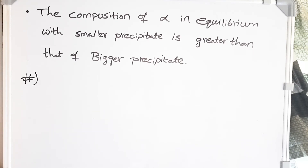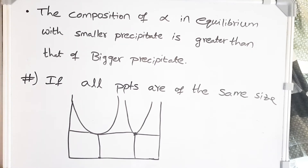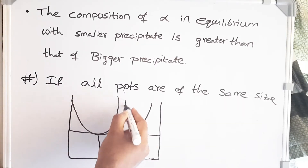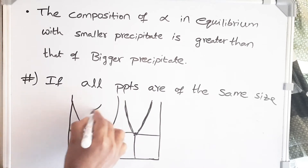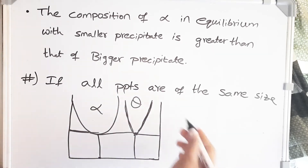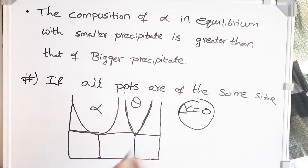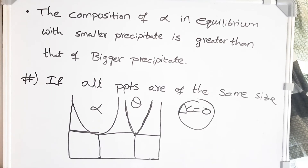If all the precipitates are of the same size, every precipitate has the same free energy curve, so the equilibrium composition of alpha with theta is the same for all precipitates, meaning delta C is zero. There is no driving force from one precipitate to another, so there is no Ostwald ripening and no precipitate coarsening. For precipitate coarsening to occur, the precipitates must be of different sizes. Homogeneous nucleation gives precipitates of the same size, while heterogeneous nucleation gives particles of different sizes, which promotes precipitate coarsening.